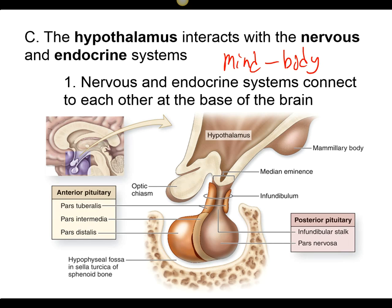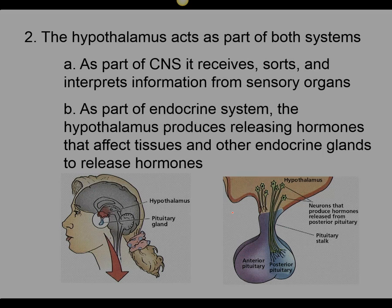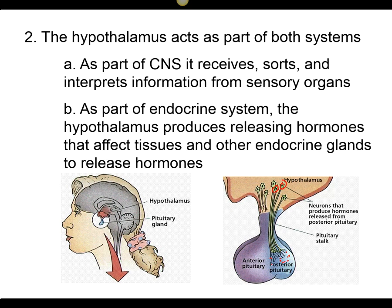If you're stressed out, it can actually affect you physiologically. One of the best examples of the mind-body connection is how the hypothalamus is connected to the pituitary gland. This is where your nervous and endocrine systems connect. You can literally be emotionally stressed out and it causes production of hormones that affect you physiologically. The hypothalamus has cells that release neurotransmitters that activate the pituitary gland to produce hormones, which then affect tissues and other endocrine glands. As part of the central nervous system, it receives and processes information and activates the endocrine system.